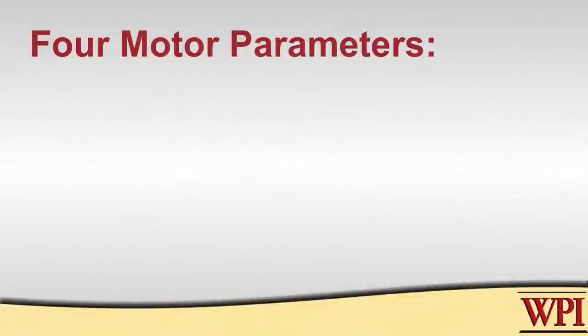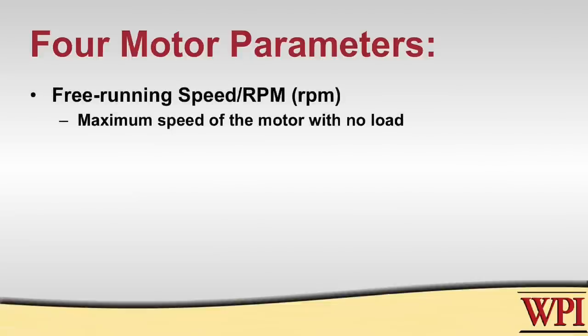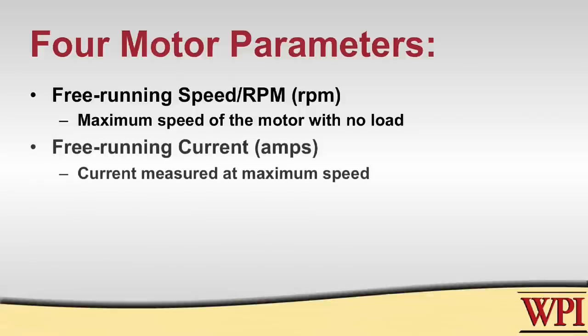The cool thing is that when you buy a motor you can test it yourself by measuring only four parameters. The first two are easy to get. If you power the motor up with its intended voltage and run it without any load, you measure the speed — that's called free-running RPM. The second parameter, measured at full voltage and no load, is how much current is going into the motor. That's called the free-running current. Those two parameters are easy to get.